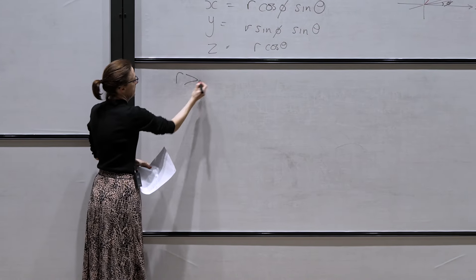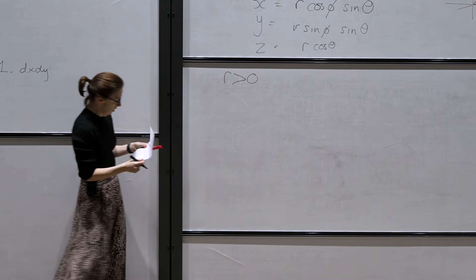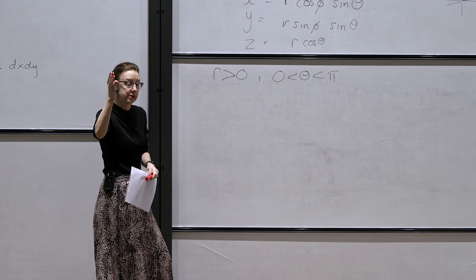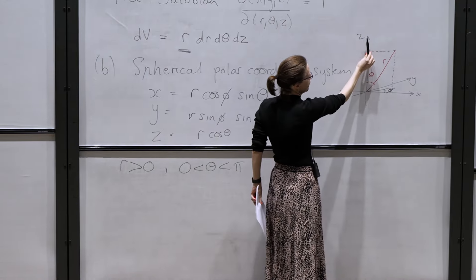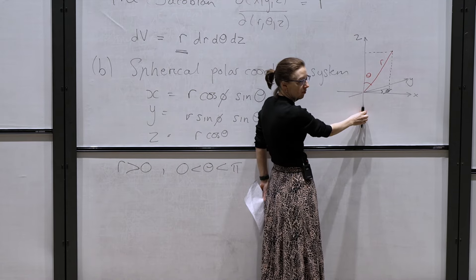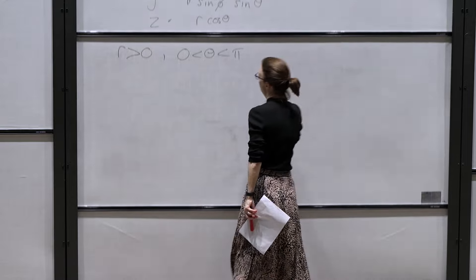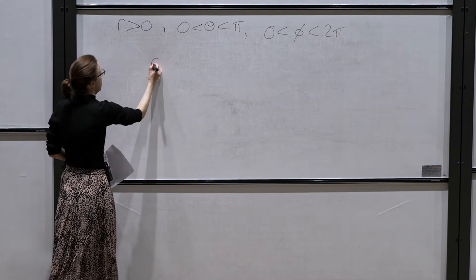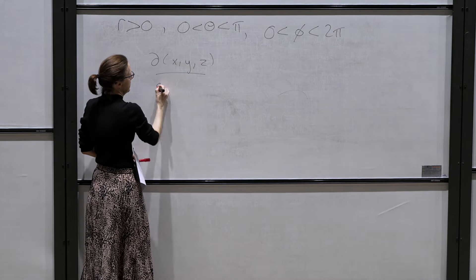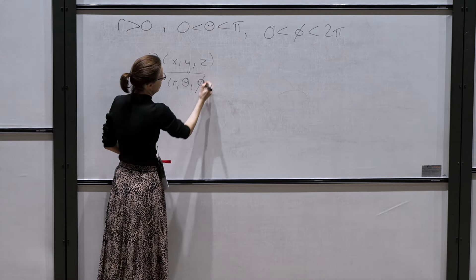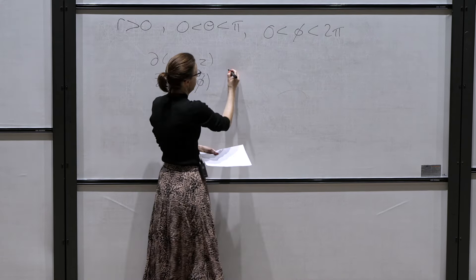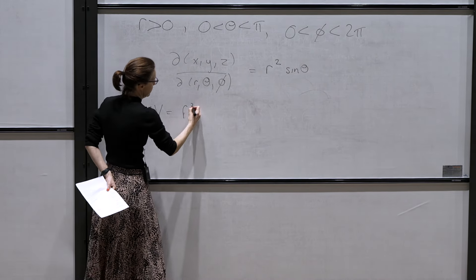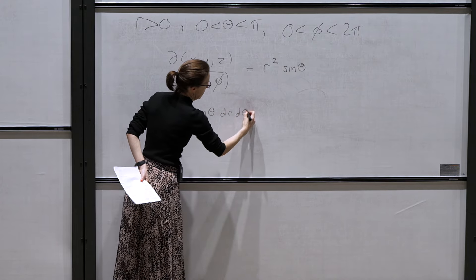In spherical polars, r is obviously positive; theta goes between 0 and pi — any point can go from up here all the way around to down, so theta between 0 and pi — and phi goes between 0 and 2pi. The Jacobian d(x,y,z)/d(r,theta,phi) is r² sin(theta). So the volume element becomes r² sin(theta) dr dtheta dphi.